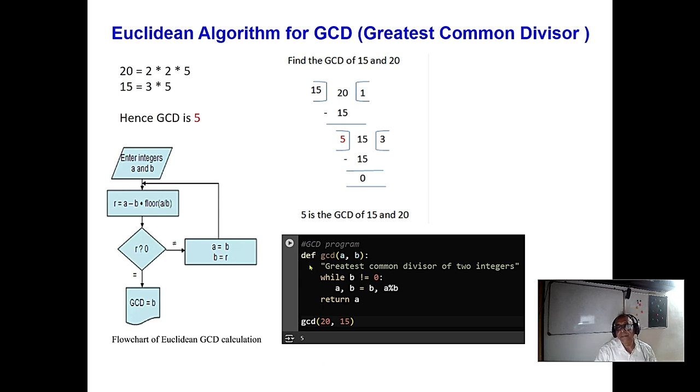This is a sample program in Python. Say GCD A, B and while not remainder not equal to 0, you replace A, B to B, A percentage B.